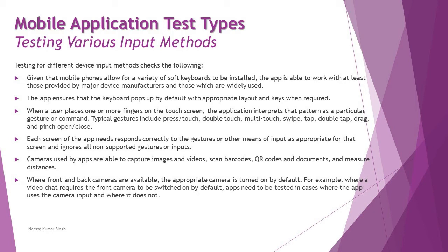Cameras used by apps must be able to capture images and videos, scan barcodes, QR codes and documents, and measure distances. Many phones have been updated to measure distances or lengths of objects using the app. A camera can also be used for face recognition to unlock the phone via Face ID. Apps need to be tested both in cases where the app uses camera input and where it does not.